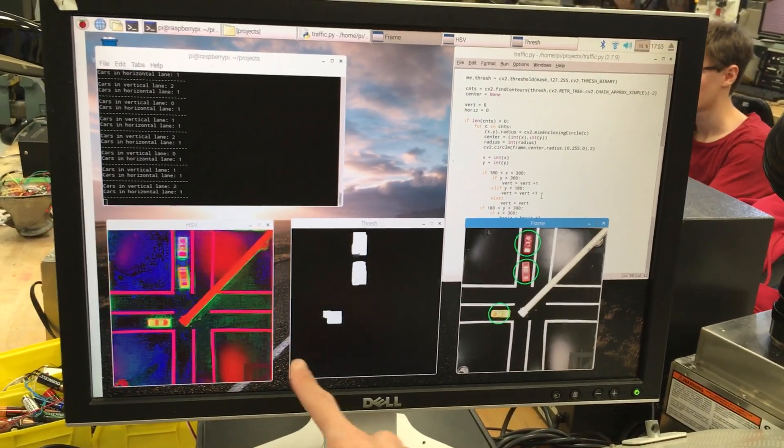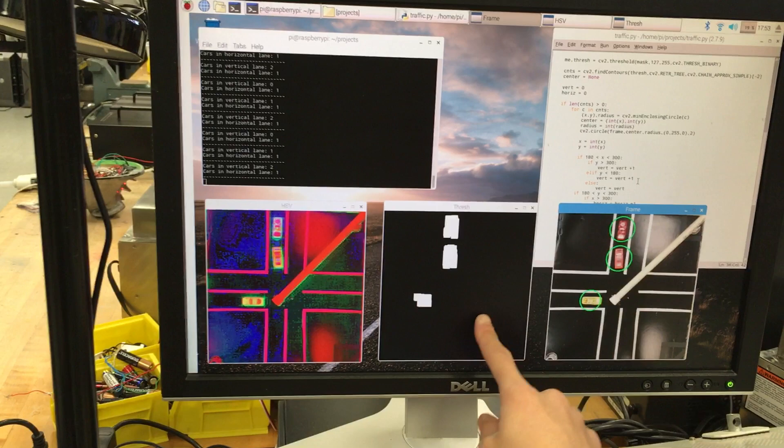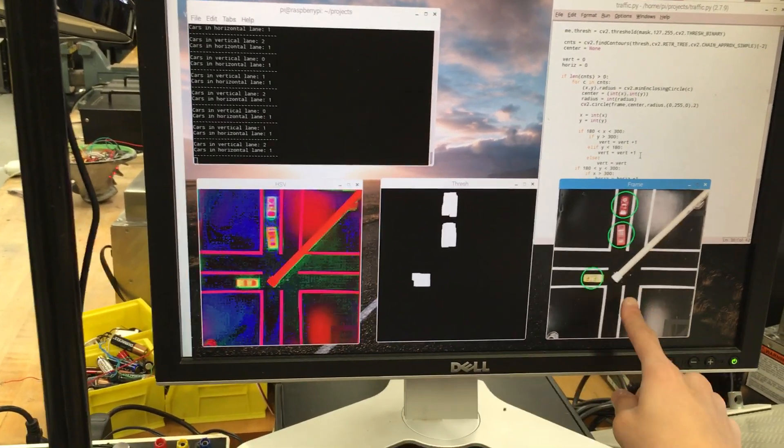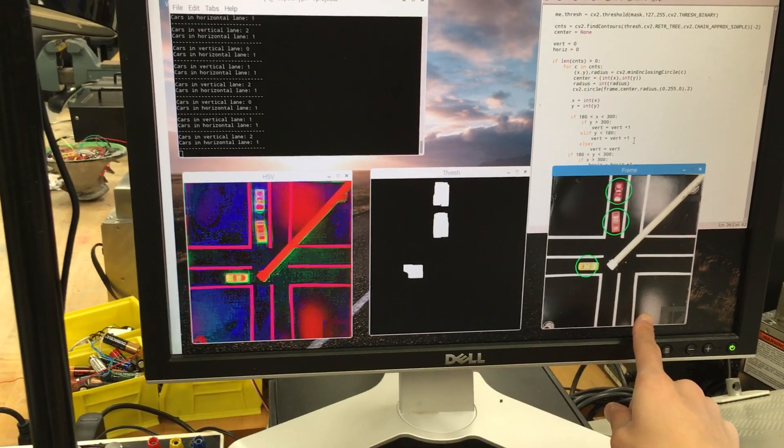Here is the raw image data. Here is the thresholded image that detects red, orange, and yellow cars. And then here's the final image that has the cars that are circled.